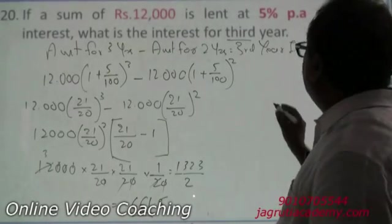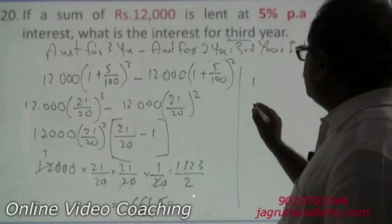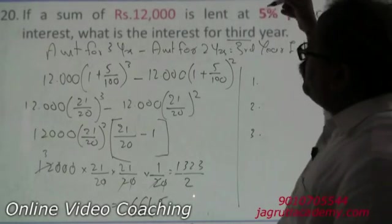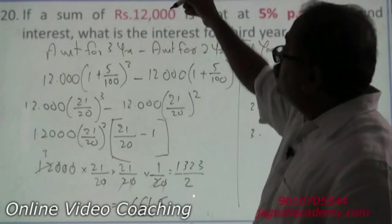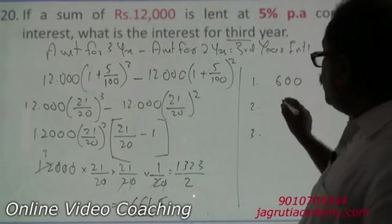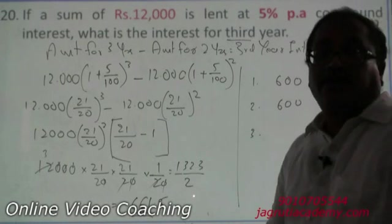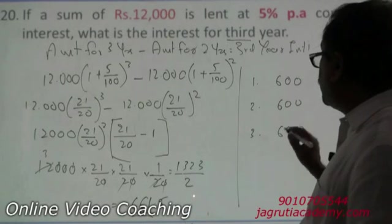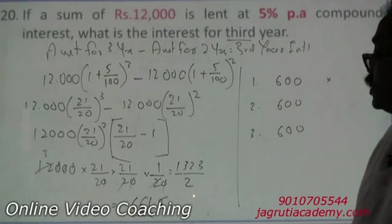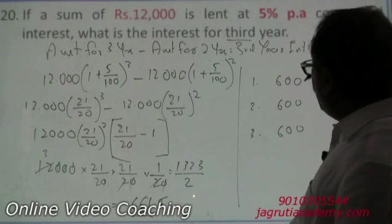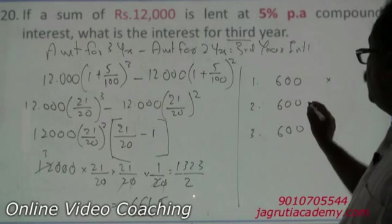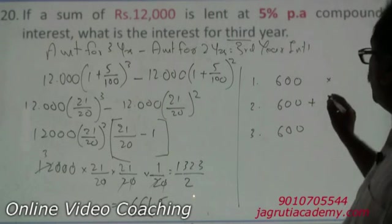Now the second method. First year interest is 5% of 12,000 = 600. Second year interest on principal is also 600. Third year interest on principal is also 600. In the second year there is also interest on the previous interest of 600: 5% of 600 = 30.